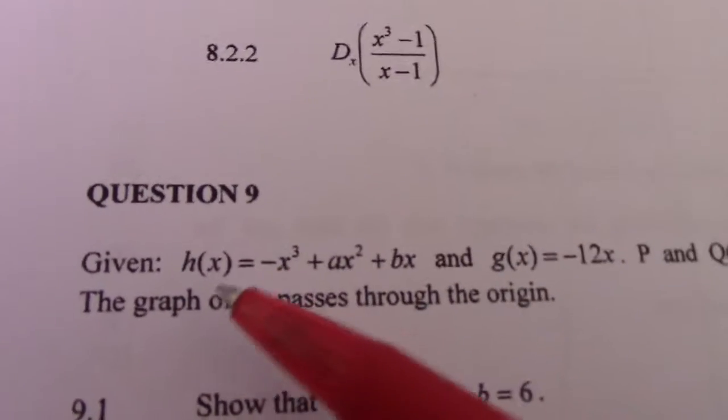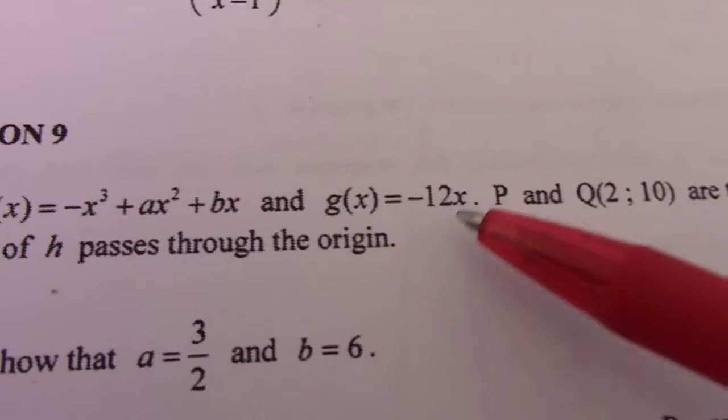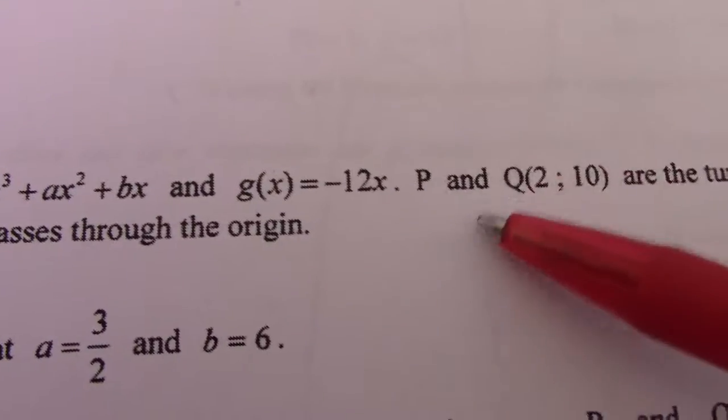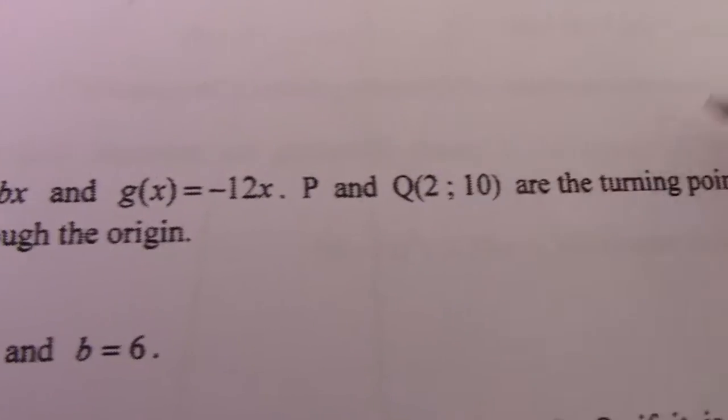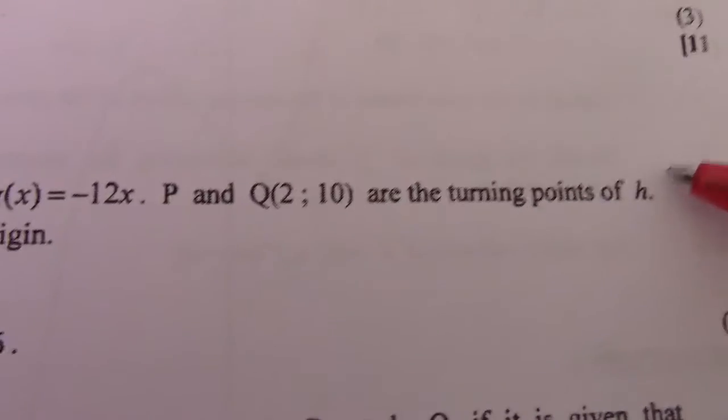Given h(x) = -x³ + ax² + bx and g(x) = -12x. P and Q(2, 10) are the turning points of h. The graph of h passes through the origin, so we have another point (0, 0).